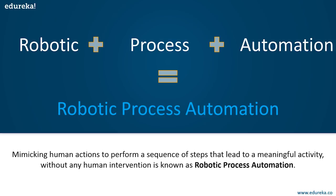If we summarize all these terms together — robotic, process, and automation — it basically forms robotic process automation. It's really simple: it's just a process done by robots by mimicking human actions to reduce human intervention. So that was about robotic process automation.